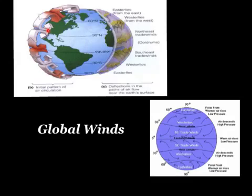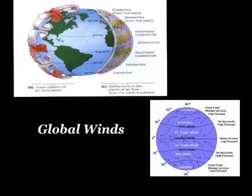Around 30 degrees north and south, the sinking cooler air creates generally high pressure areas. We also have lower pressure areas around 60 degrees north and south where air is rising again. The temperature at 60 degrees north and south is much cooler than at the equator, but heating still takes place, the air rises and moves both north and south, cools and sinks again. This convection on a global scale creates winds on a global scale.